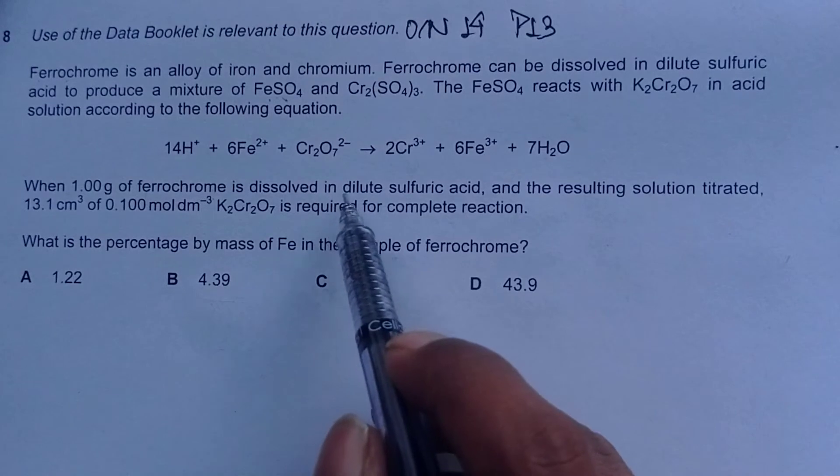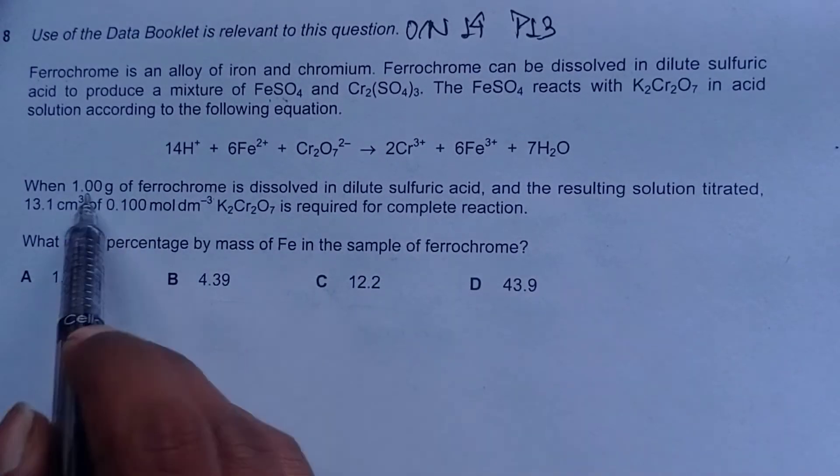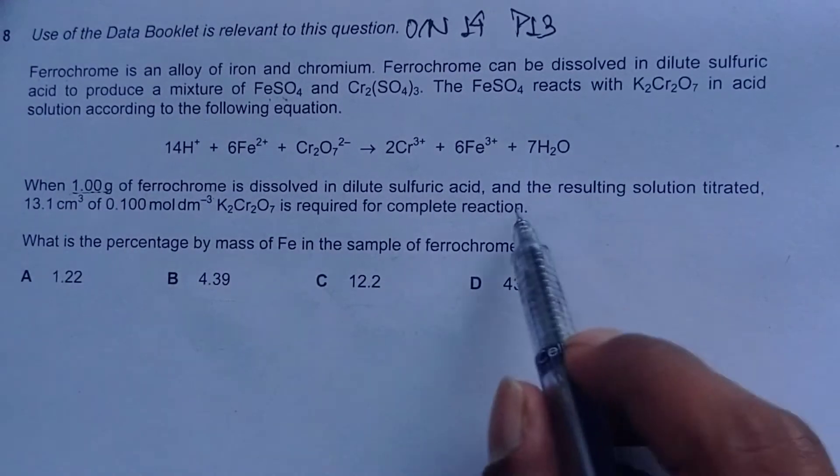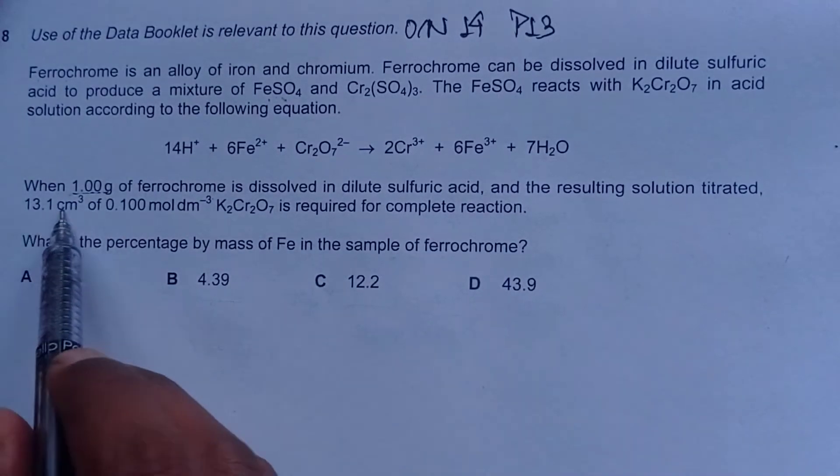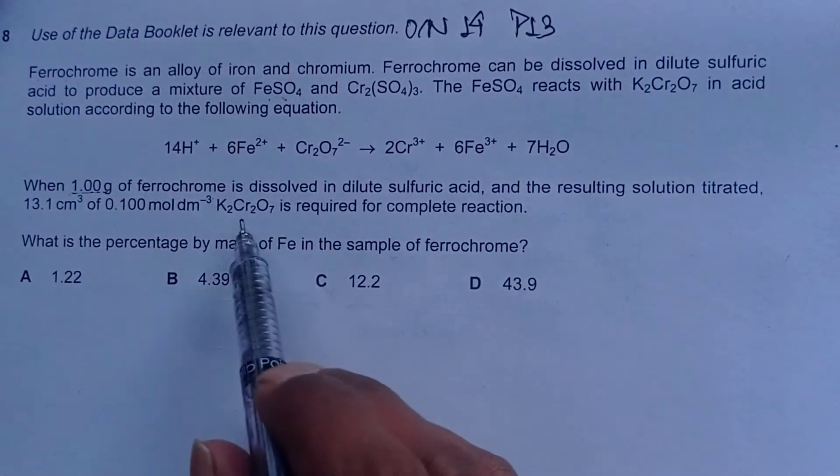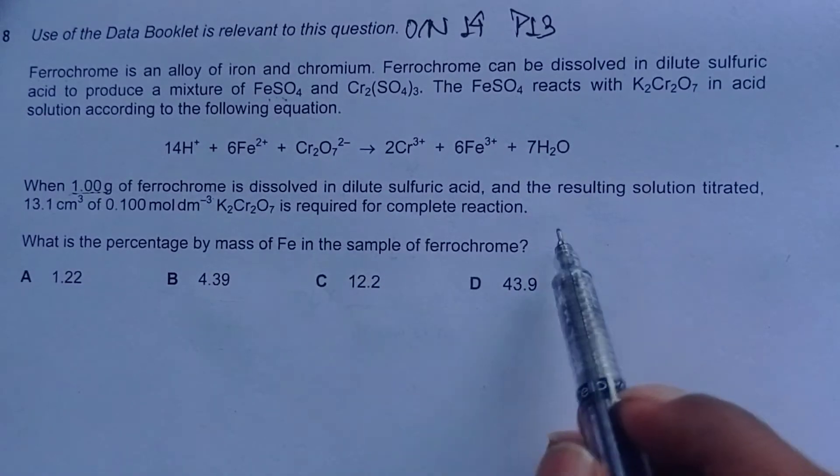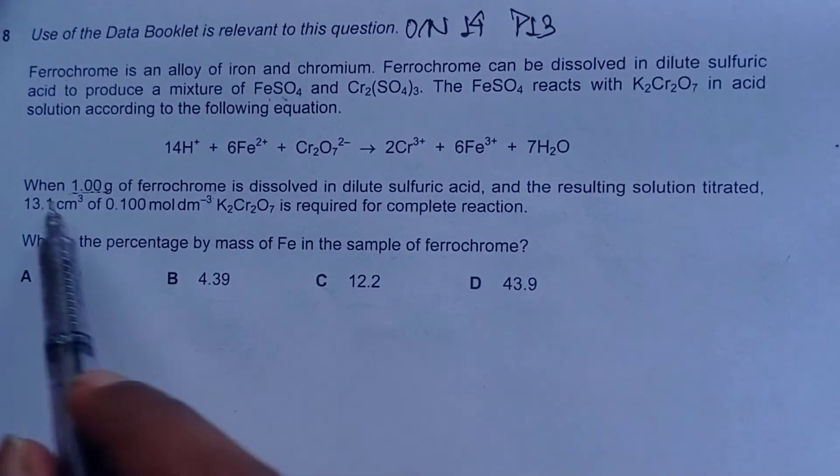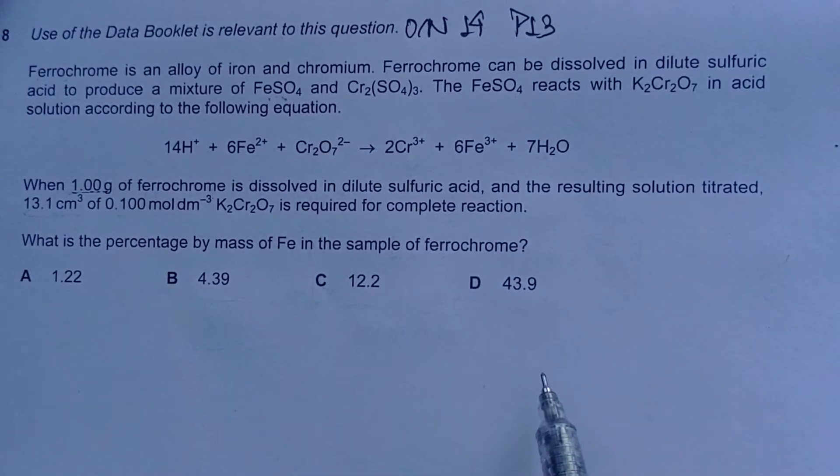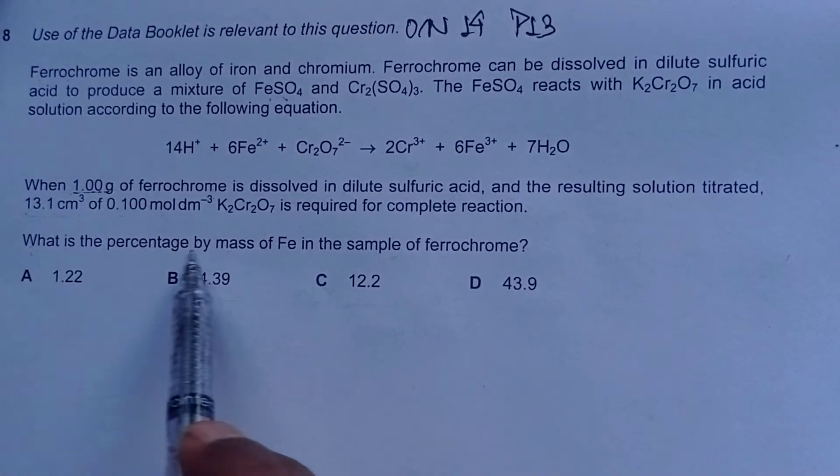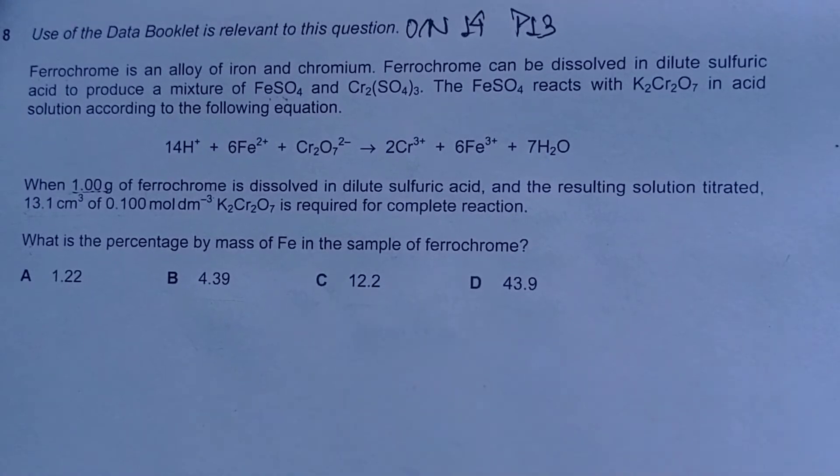When 1.00g of ferrochrome is dissolved in dilute sulfuric acid, and the resulting solution titrated, 13.1 cm³ of 0.100 mol/dm³ K2Cr2O7 is required for complete reaction. What is the percentage by mass of Fe in the sample of ferrochrome?